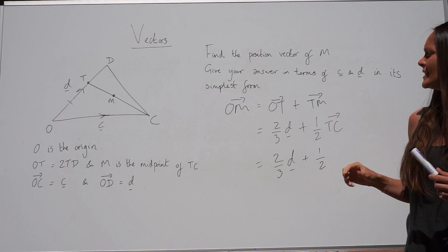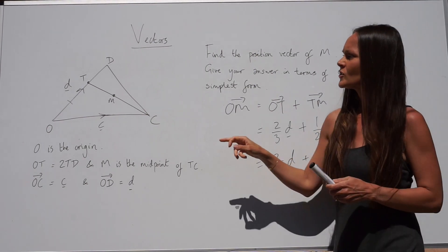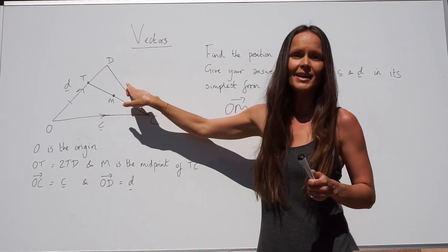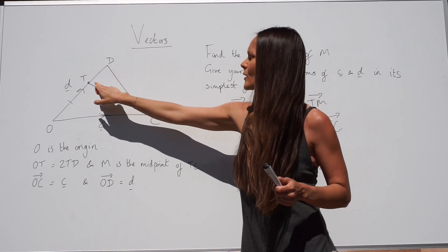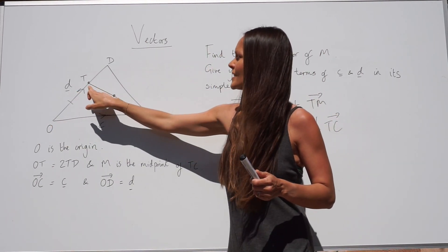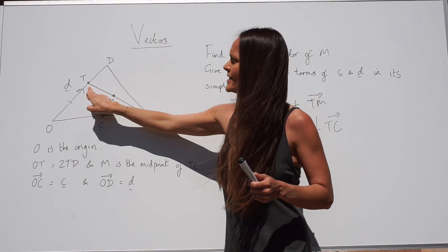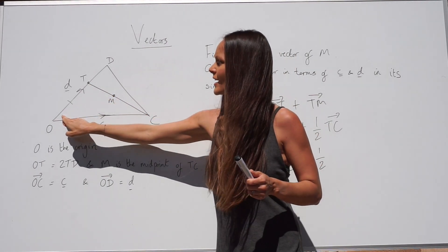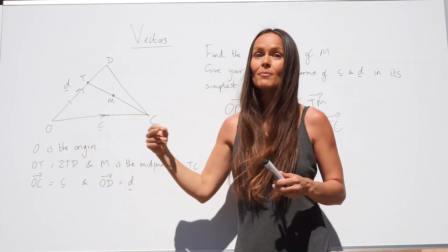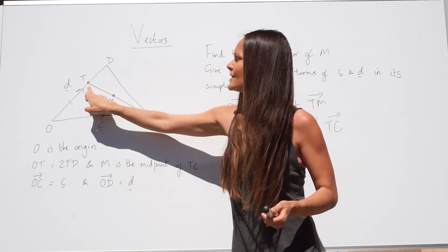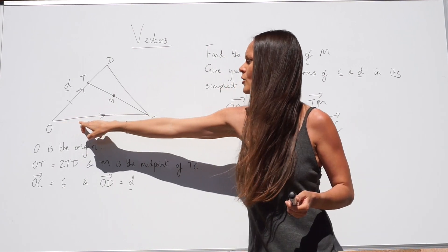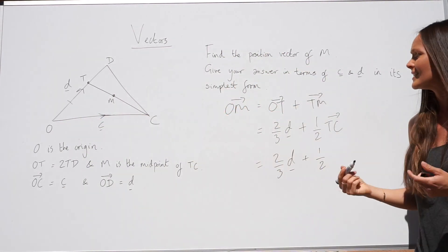So I'm just going to write that down again. So to work out TC, we need to travel this way. I can't travel this way because there isn't a vector labelled on this line. Likewise, there's no vector on here. So I need to travel this way. So to get from T to C, I need to travel negative two-thirds D. So it's the same as what I wrote down before, but because we're travelling against the arrow, it becomes negative. So negative two-thirds D plus C. Because we're travelling in the correct direction. So that is TC.